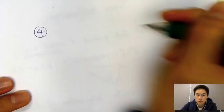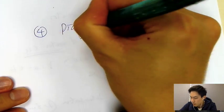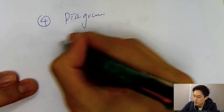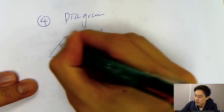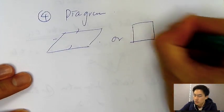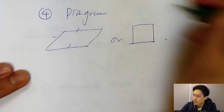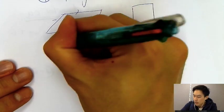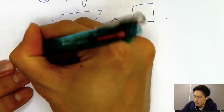The fourth question type will be the diagram question. So diagram, it will be like, it's always parallelogram or rectangle. And if I say parallelogram A, B, C, D, parallelogram.